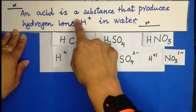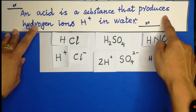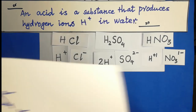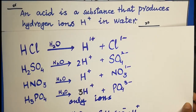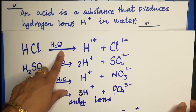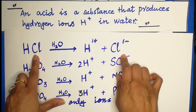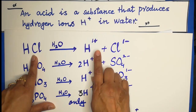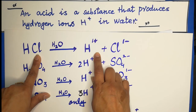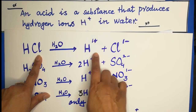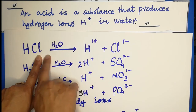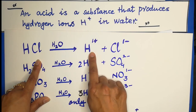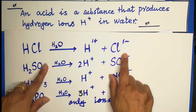The second definition: an acid is a substance that produces hydrogen ions in water. When we dissolve an acid in water, it produces hydrogen ions. Remember, acids always need water for their acidic character, because an acid like HCl is a covalent molecule and will not give us ions unless dissolved in water. When dissolved, HCl produces hydrogen ions and chloride ions.